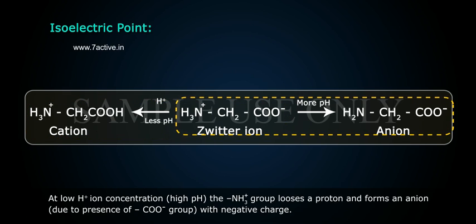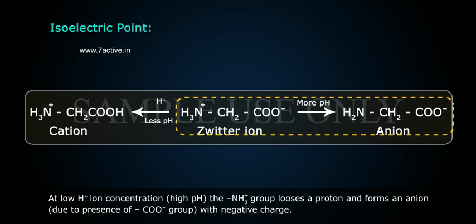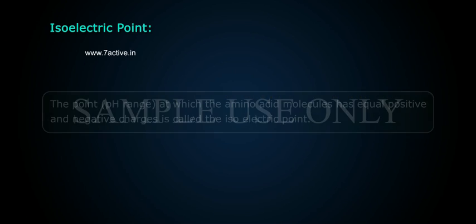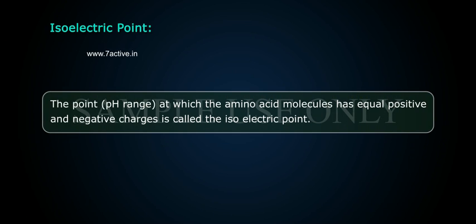At low H+ ion concentration — high pH — the NH₃⁺ group loses a proton and forms an anion due to the presence of the COO⁻ group, giving it a negative charge. The pH at which the amino acid molecule has equal positive and negative charges is called the isoelectric point.